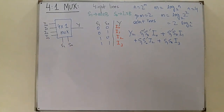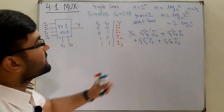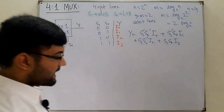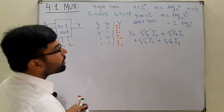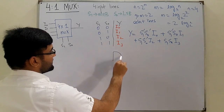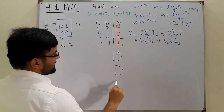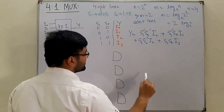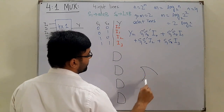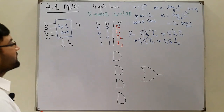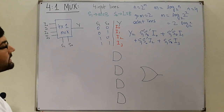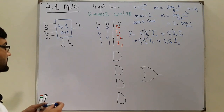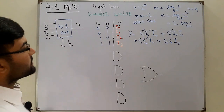To draw the logic diagram, we need 4 AND gates — one for each product term — and then OR all of them together. The inputs required are s1, s1 complement, s0, s0 complement, and i0, i1, i2, and i3.